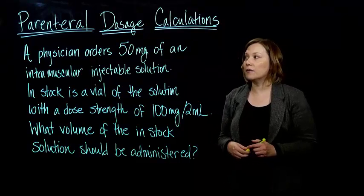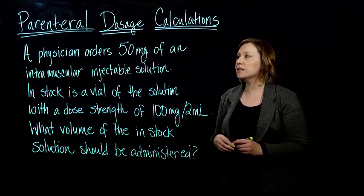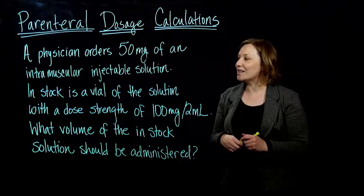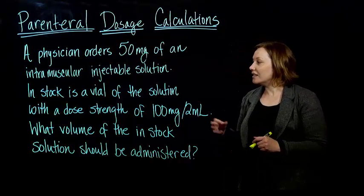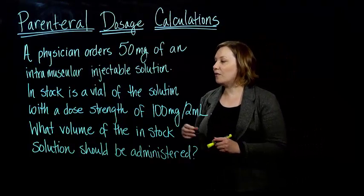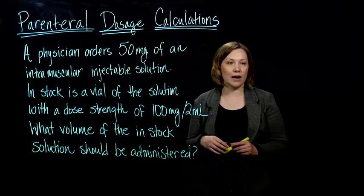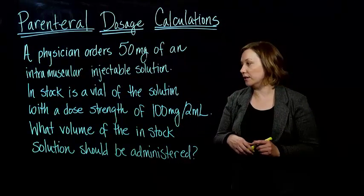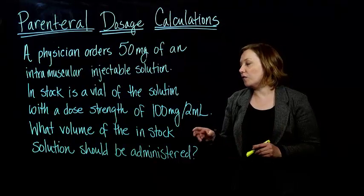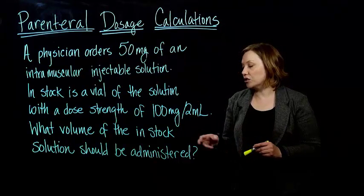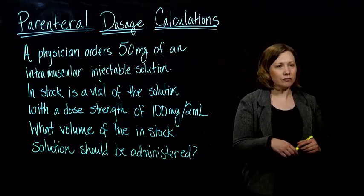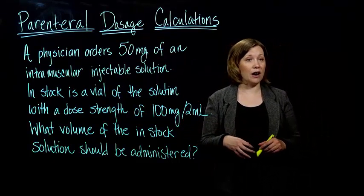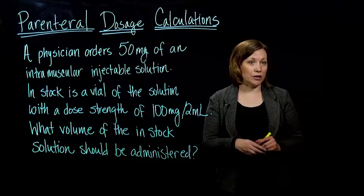I've got an example here. A physician orders 50 milligrams of an intramuscular injectable solution. In stock, we have a vial of the solution with a dose strength of 100 milligrams per 2 milliliters. We want to figure out what volume of the in-stock solution should be administered — that's the milliliters. We're trying to figure out how many milliliters we should administer.